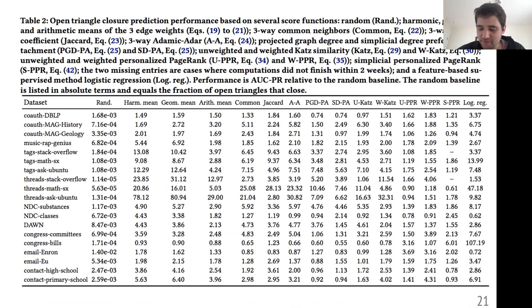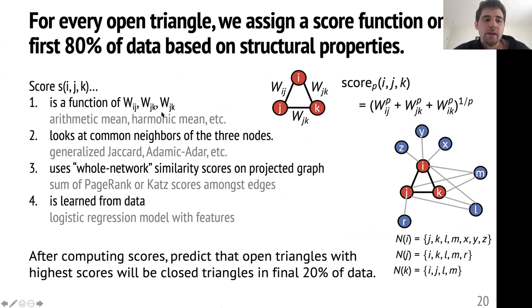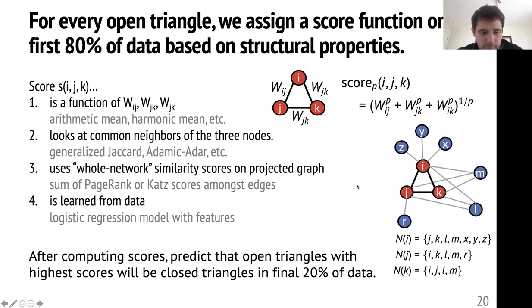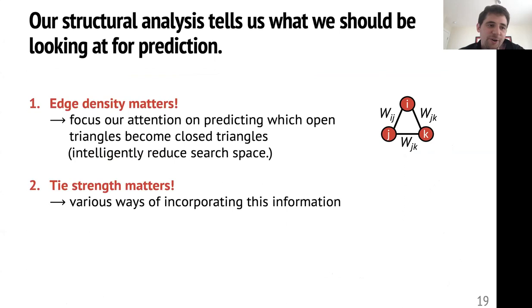A question from the chat: was the 80/20 split segmented by time? Yes, segmented by time. There's another way of setting up these problems — if you don't have time and are thinking about missing data, you could randomly delete 20% of your data and try to predict that missing 20%. But since we had temporal data, we did it in the temporal fashion. Another follow-up: are we considering all triplets? We only consider triplets in which each pair has been in at least one interaction together. We already know that open triangles are more likely to close than other structures, so we're just trying to determine whether an open triangle will become closed or not.